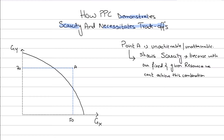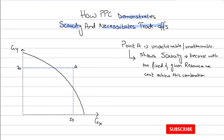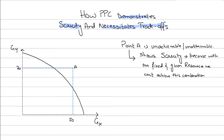Whenever you're asked in the exam to show how PPC demonstrates scarcity, remember: the PPC shows all the possible combinations you can produce with your given resources. Since resources are fixed, limited, and scarce, you can't exceed the combinations beyond the PPC. Whatever resources you have, you produce along the PPC because it shows the maximum possible combinations along the production possibility frontier.